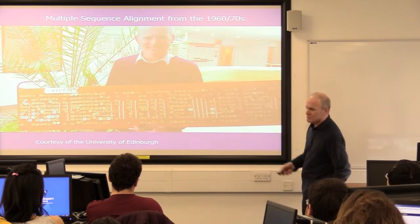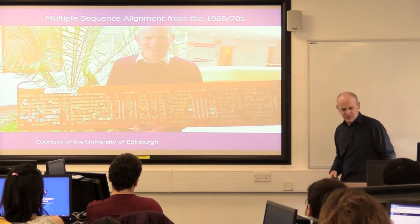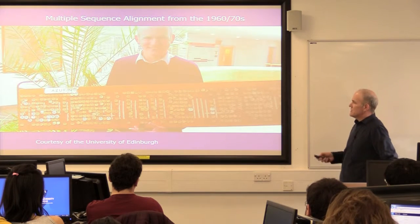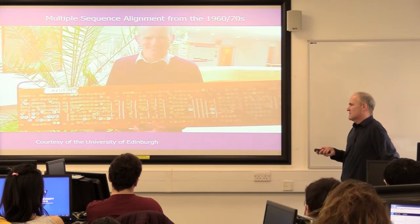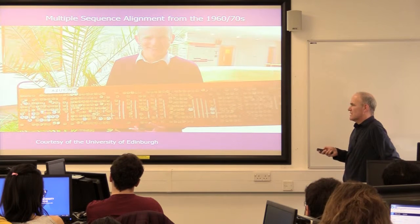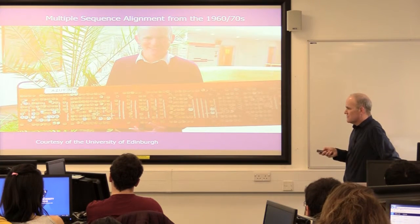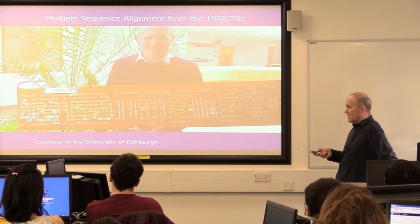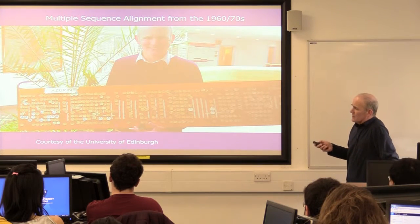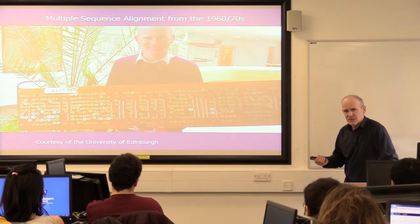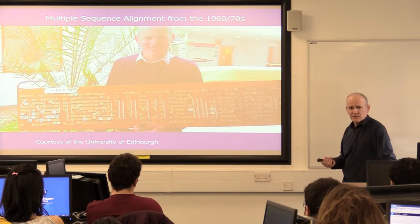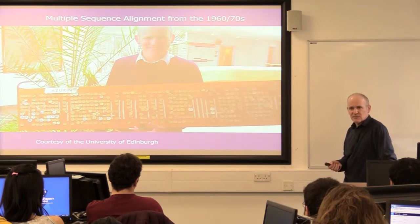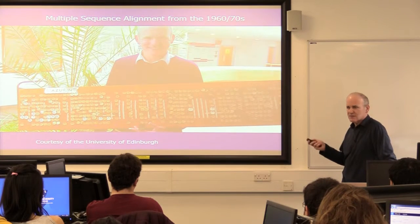And this is azurin, a particular protein. Back in the 1960s, they were sequencing azurins from different species and they've got nine of them here. They used Edman degradation to do the sequencing — so it was chemical sequencing of the protein, not the nucleic acid. You didn't have DNA sequencing when they did this.